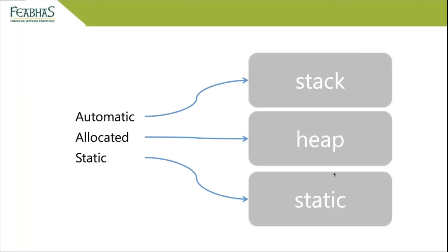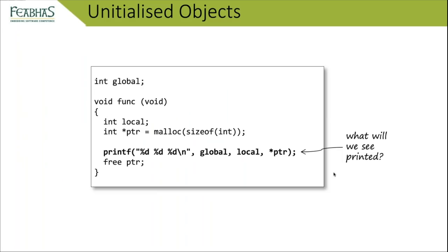The general terms used in C programming are three memory regions: the stack, the heap, and the static region. All automatics are typically allocated off the stack if not handled by registers. All allocated memory comes from the heap. All statics go into the static region. The question then is: what is the state of memory when we first create these objects?